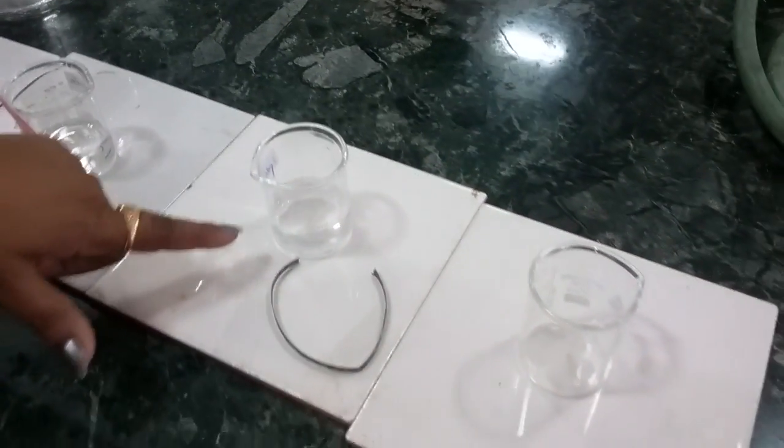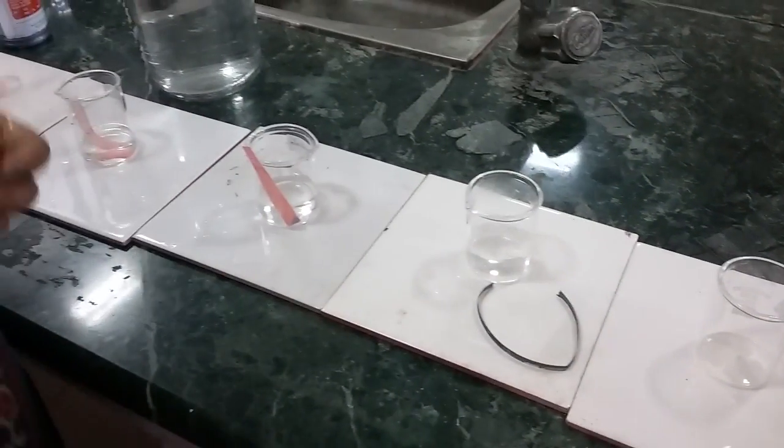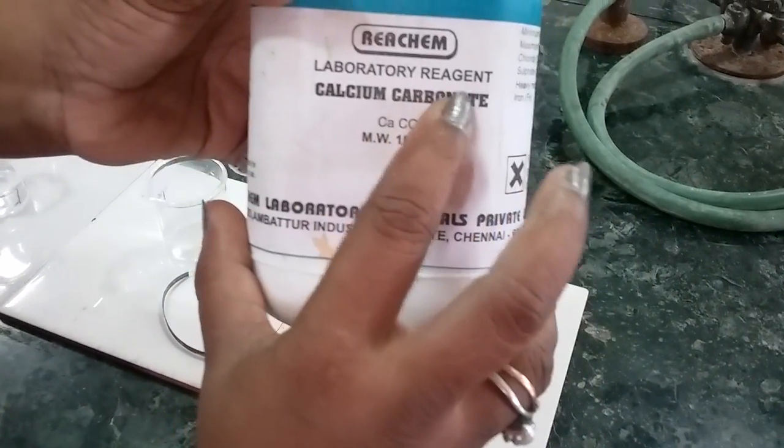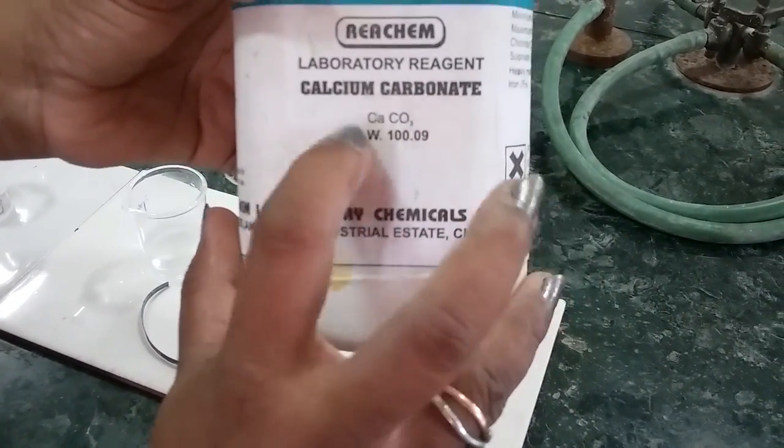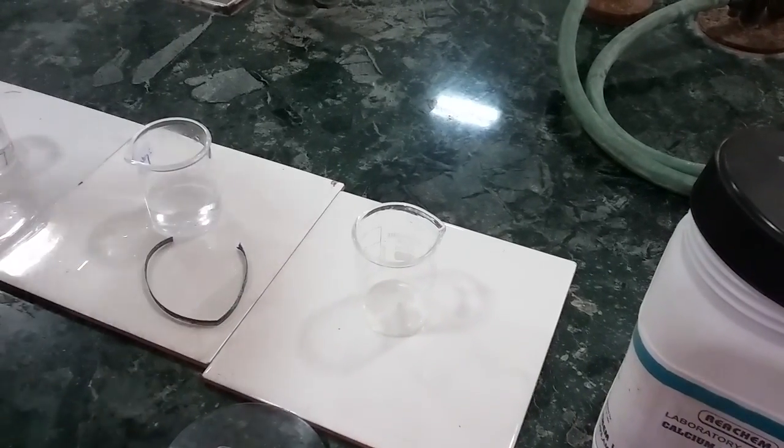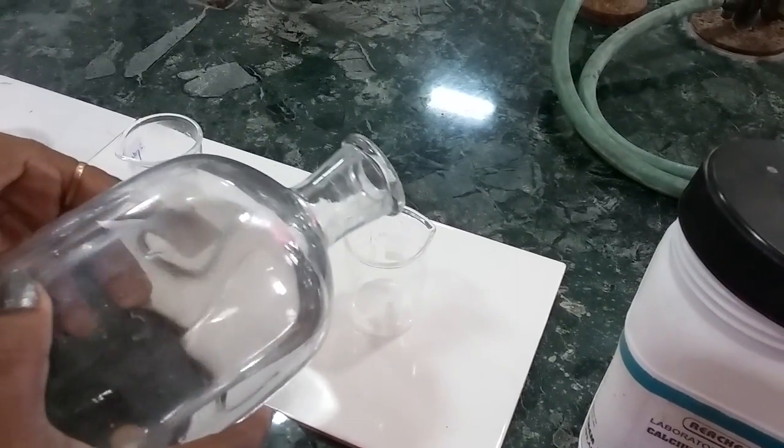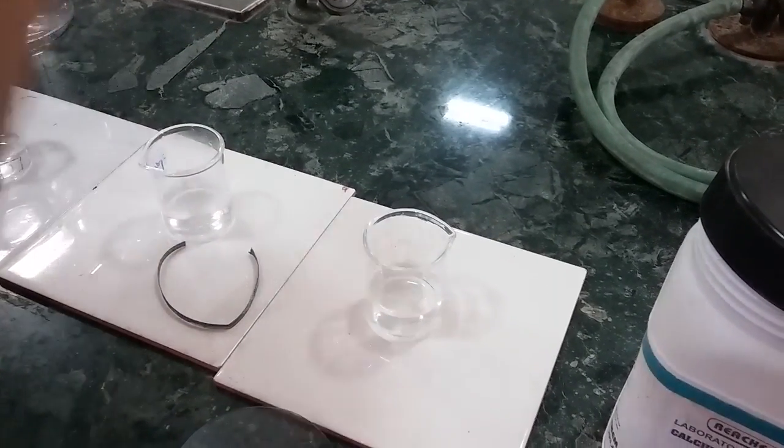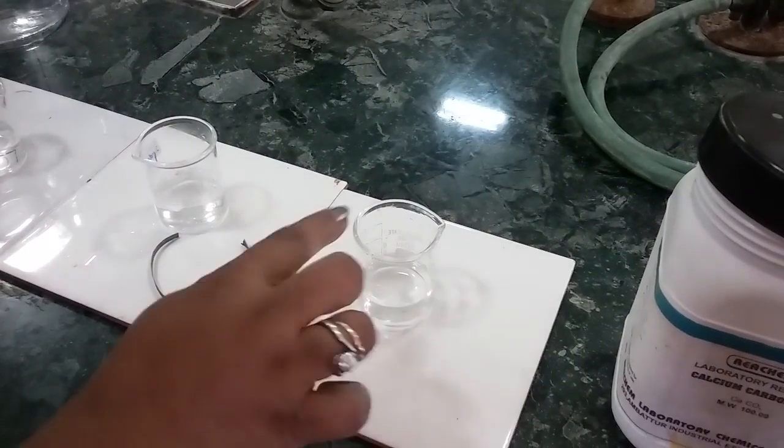This is also a test for acid. Here you can see calcium carbonate, CaCO3. If you put any carbonate salt in H2SO4—now I am pouring H2SO4—if you pour any carbonate salt in acid,